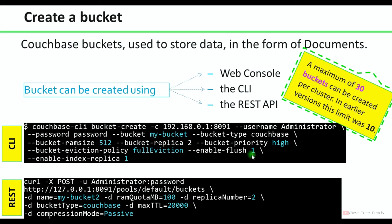Bucket priority, eviction policy — full eviction and value only — we are going to discuss these. If you enable flush as 1, that means when you click on the bucket, the flush button will be available. If kept at zero, it will not be shown — you can enable or disable any type. Enable index replicas 1 will enable the replicas for the indexes created on this bucket.